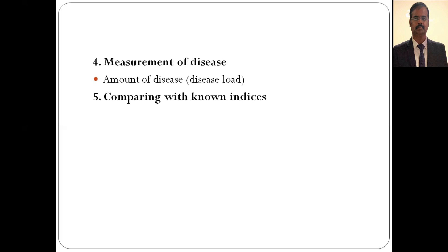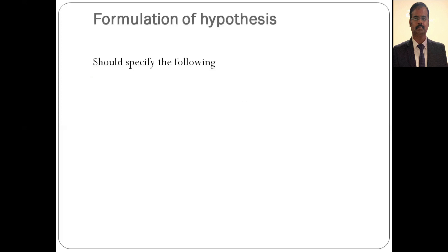Since there is no comparison group in descriptive studies, we compare with known existing indices, which gives clues to aetiology and allows formulation of a hypothesis at the end of the study. Descriptive studies are always the initial study designs before proceeding to case-control, cohort, or randomized controlled trials. The hypothesis formulated can then be tested with the help of analytical studies.